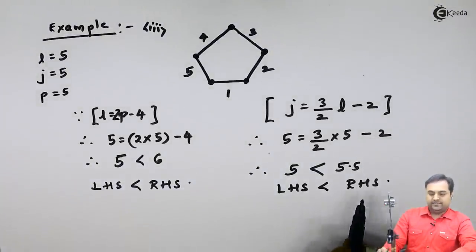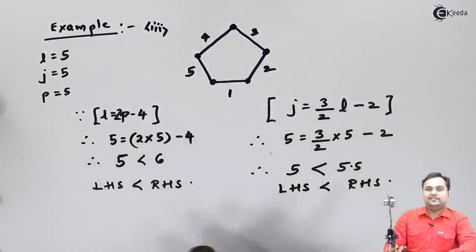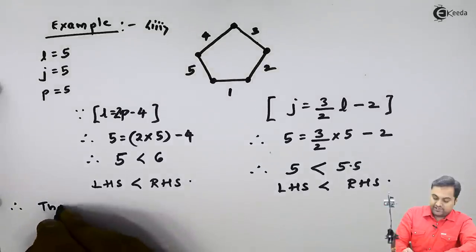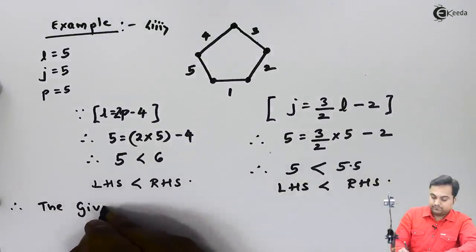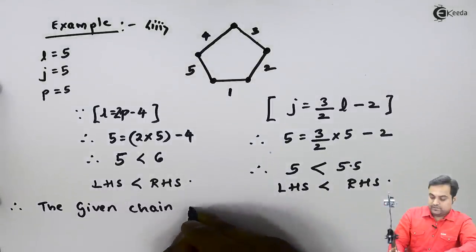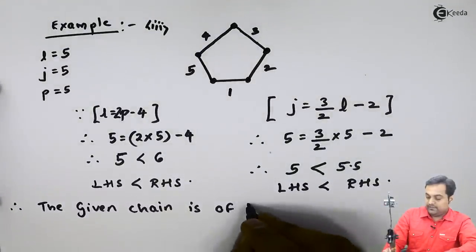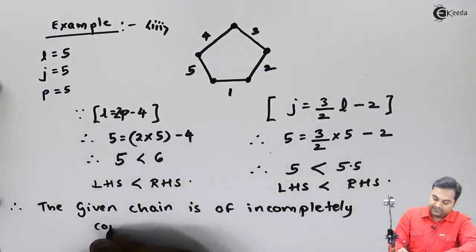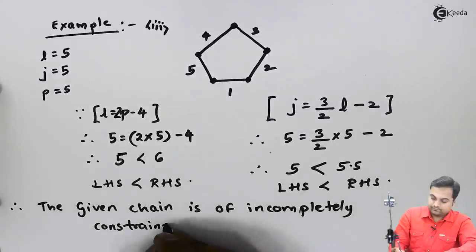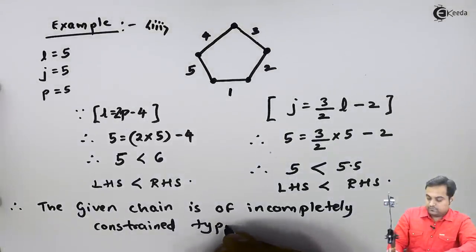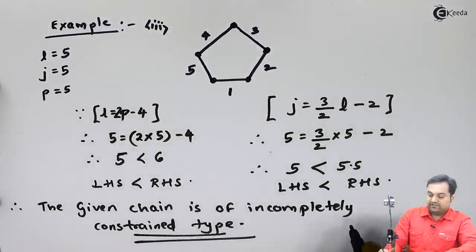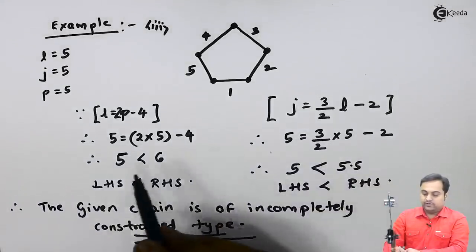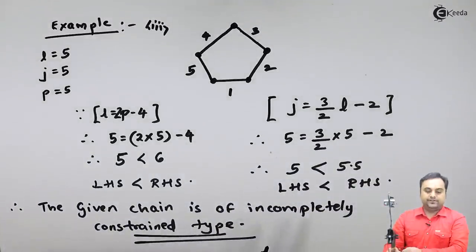Since the right-hand side is greater in both formulas, this example is an incompletely constrained chain. Therefore, the given chain is of the incompletely constrained type. This is proven by the calculations performed for both formulas.